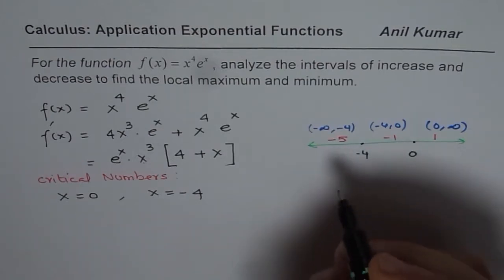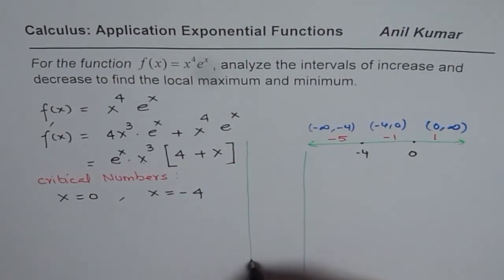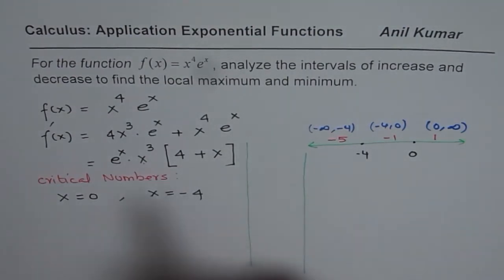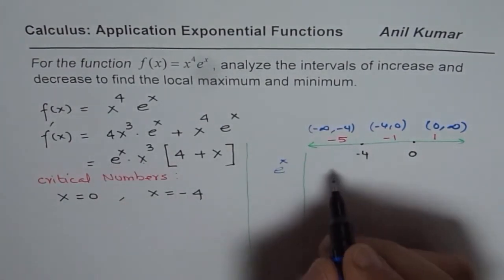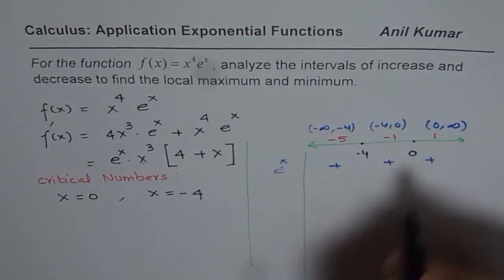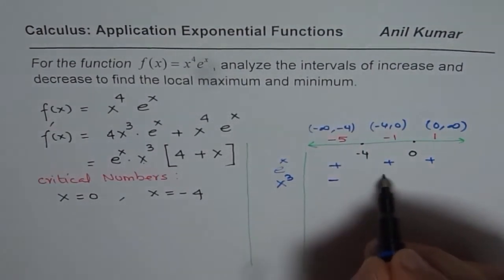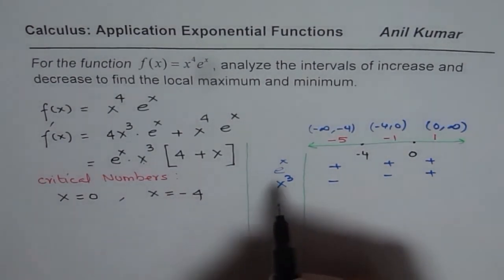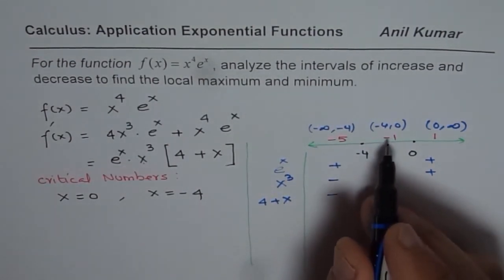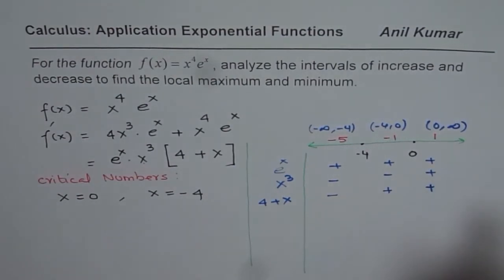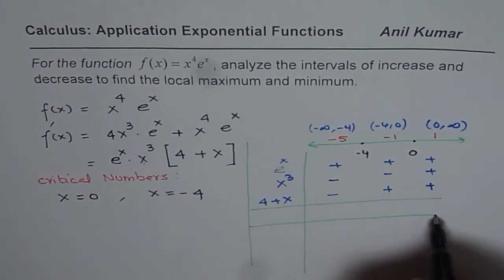At these test points we check whether the derivative is positive or negative by examining the sign of each factor. eˣ is always positive across all intervals. x³ is negative for negative values and positive for positive values. For (4 + x): using −5 gives a negative value, −1 gives positive, and +1 gives positive. So we multiply the signs of all three factors to determine the sign of the derivative.